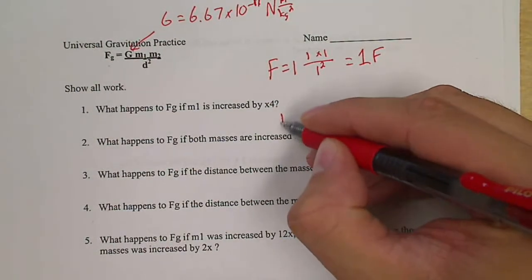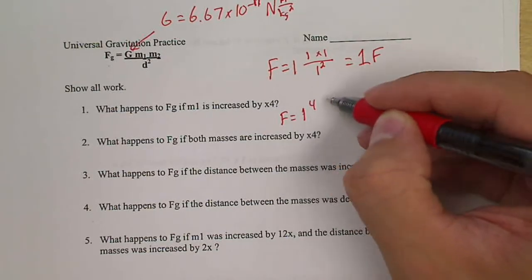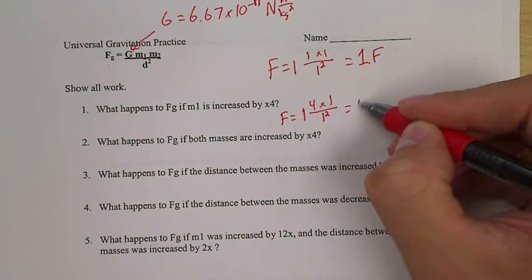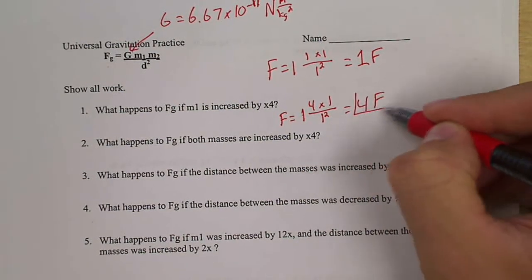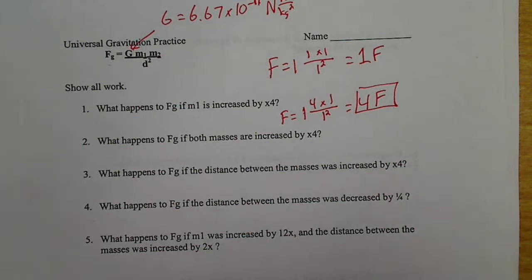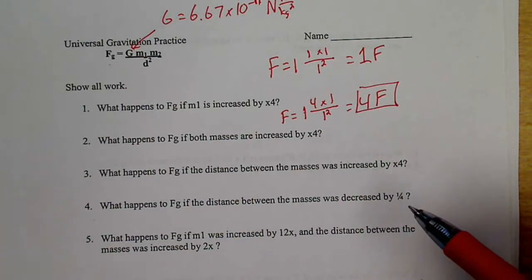But if I made a change, so I'm keeping G, M1 I'm going to increase to four. Didn't change M2, didn't change distance. This gives me four times the force. So whatever the original force is, after I change mass by four, the force is now four times bigger.